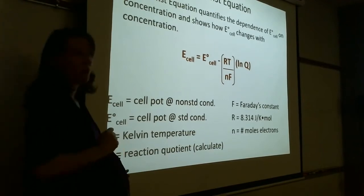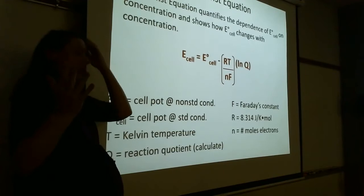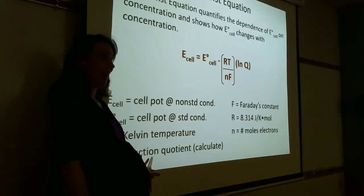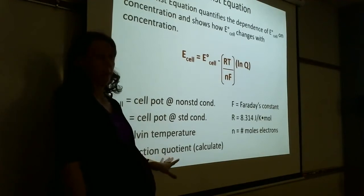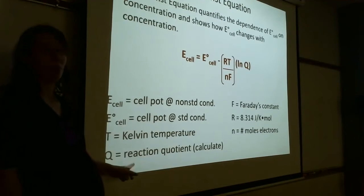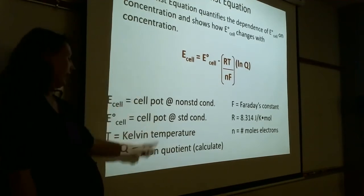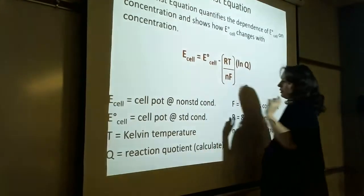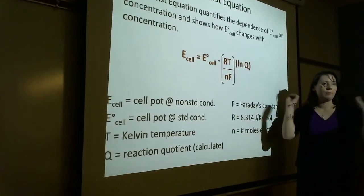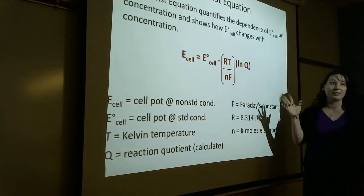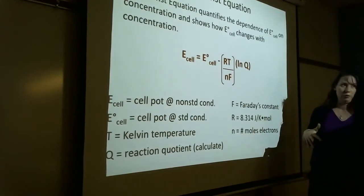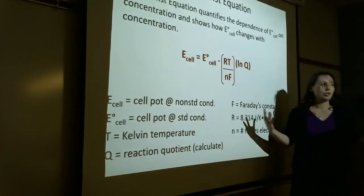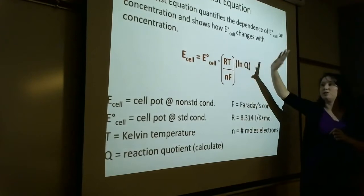If concentrations are not given, assume one mole per liter. But if I give you a whole bunch of molarities and the temperature is not 25°C, that should immediately signal: use the Nernst equation. You're not at standard state, so you can't do it the simple way. Anytime you see a temperature other than 25°C or concentrations other than one molar, that screams Nernst equation.